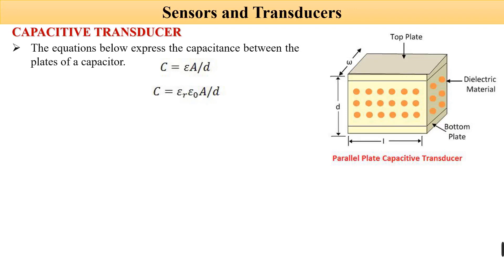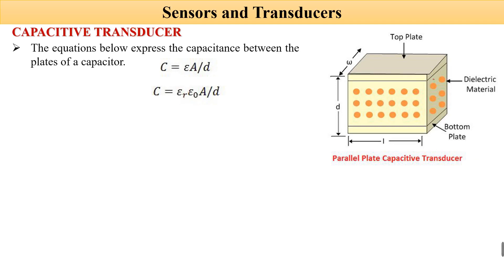The equation C = εA/d represents the capacitance of a parallel plate capacitor. You must have studied this equation in primary and secondary classes. This equation includes the relative permittivity and absolute permittivity.